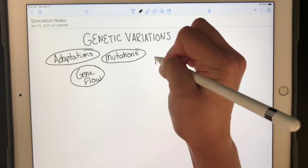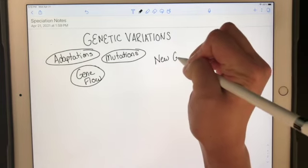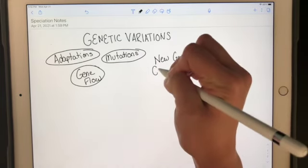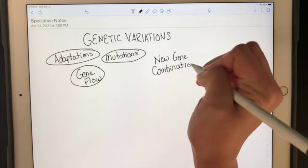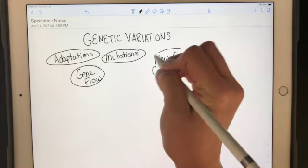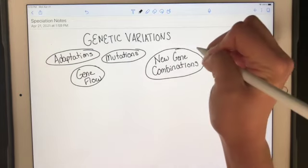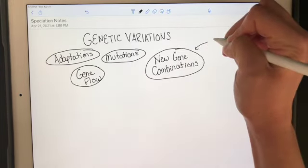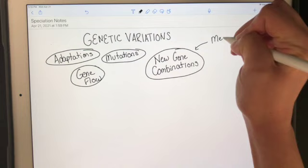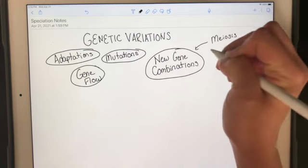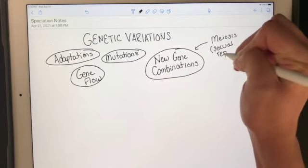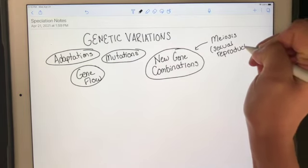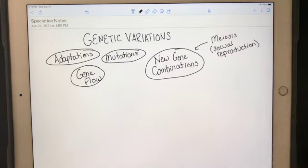New gene combinations, and those new gene combinations may be a result of meiosis, which we have talked about already. And specifically when you're thinking about meiosis, I want you guys to think sexual reproduction, whereas mitosis is that asexual reproduction.